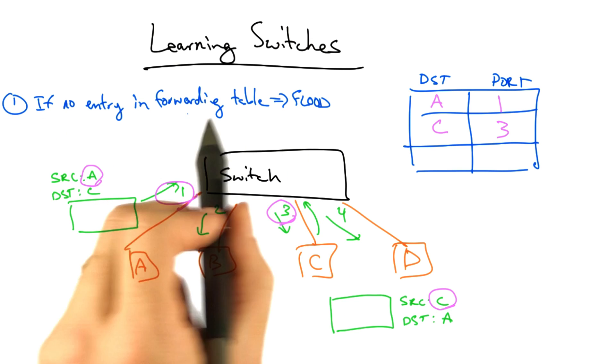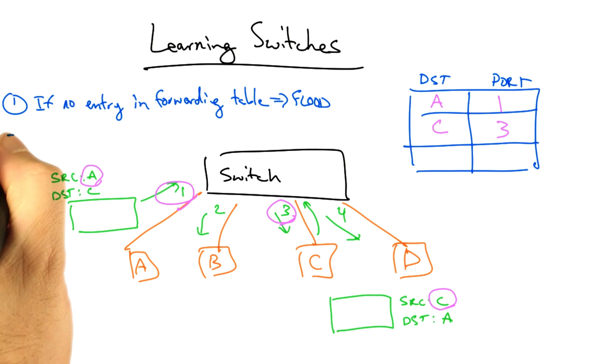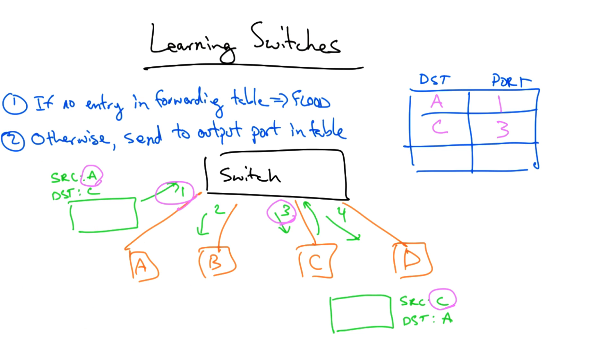So in summary, if a learning switch has no entry in the forwarding table, it must flood the frame on all outgoing ports. But otherwise, it can simply send that frame to the corresponding output port in the table.